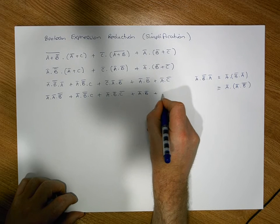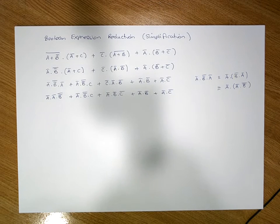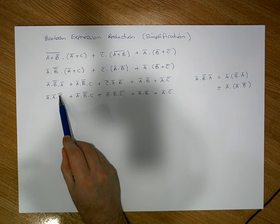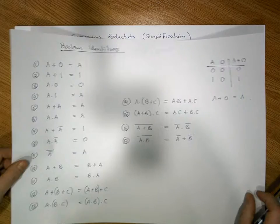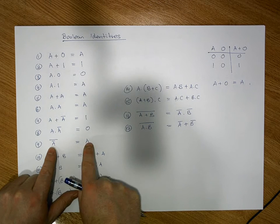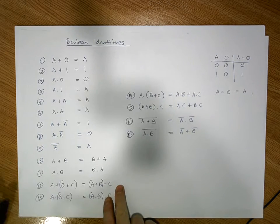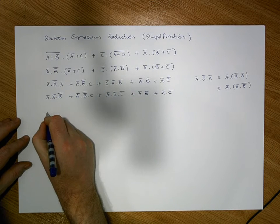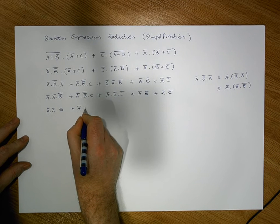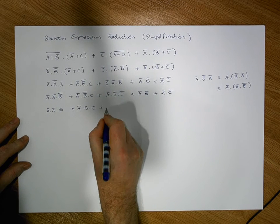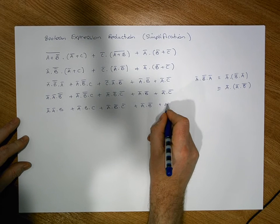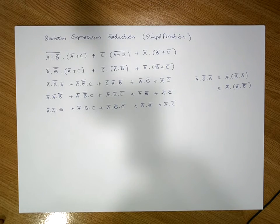We can also see we have b-bar-bar here and b-bar-bar here. Double negation says that when you have a negation negated, it's equivalent to losing the negation. So this term reduces to a-bar AND a-bar AND b, this term reduces to a-bar AND b AND c, and our remaining terms stay as a-bar AND b-bar AND c-bar, OR a-bar AND b-bar, OR a-bar AND c-bar.